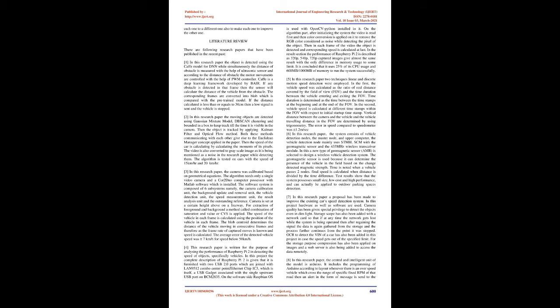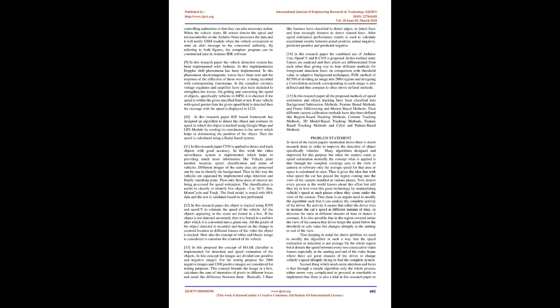In another research paper, the camera was calibrated based on geometrical equations. The algorithm needs only a single video camera and a Core 2 Duo computer processor with MATLAB software installed. The software system is composed of six subsystems: the camera calibration unit, the background update and removal unit, the vehicle detection unit, the speed measurement unit, the result analysis unit, and the outstanding reference. The camera is set at a certain height above a freeway. For extraction of foreground and background, a method called combination of saturation and value (CVS) is applied. The speed in each frame is calculated using the position of the vehicle, where the blob centroid determines the distance traveled in consecutive frames. The average error of the detected vehicle speed was ±7 km/hr for speeds below 50 km/hr.